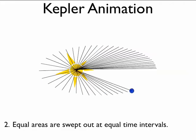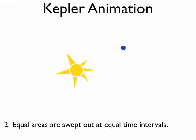So equal areas are swept out at equal time intervals. This is also a conservation of rotational inertia, or angular momentum.